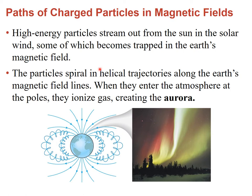It turns out that this is exactly the same type of motion that charges have when they come from the sun and reach the Earth. The Earth has a magnetic field, so when the charges coming from the sun approach, they form this type of helical motion. In doing so they are being accelerated, and when a charge is accelerated it produces radiation. Since all of that gets concentrated near the poles, near the poles there's a lot of those charges going around in circles and producing radiation — that visible radiation is known as the aurora borealis.